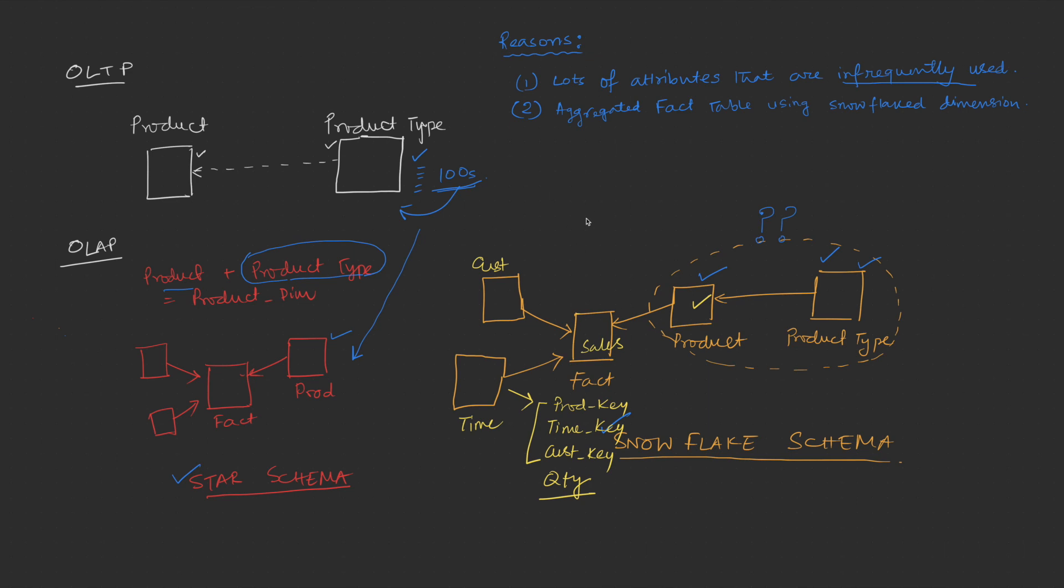Now imagine, I want to create a different sales fact table which has the same time key and the customer key. However, I want to capture the quantity in the product type level. So the structure of my new sales fact table will be something like this. I'll have the customer key over here. I'll have the time key over here. But instead of the product key, I want to keep the product type key.